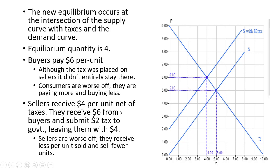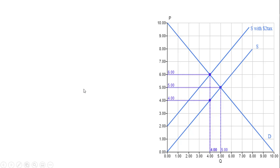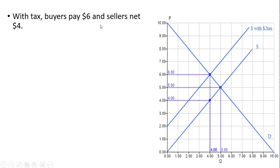Sellers are receiving $4 per unit net of taxes. They receive $6 from buyers, but the seller has to write a check to the government for $2, leaving sellers with $4 net of taxes. Sellers are worse off too — they receive less per unit (at one time $5, now only $4) and they're not selling as many units. So with the tax, buyers pay $6 and sellers net $4. Buyers will always pay more and sellers will always receive less in the face of a tax.